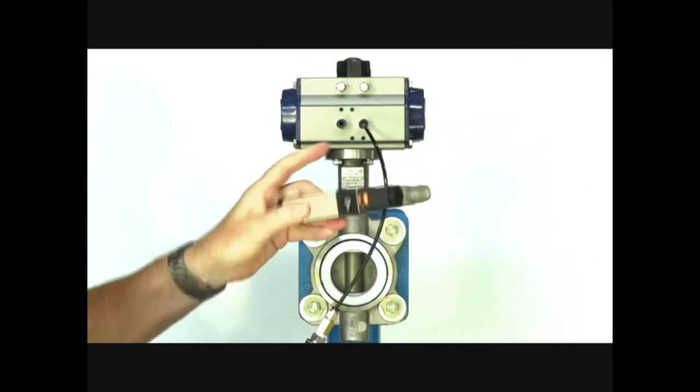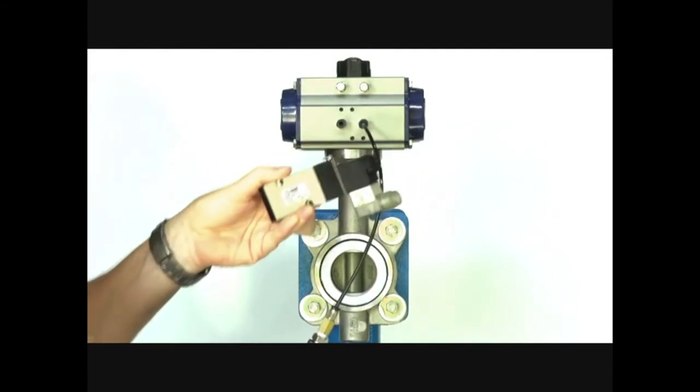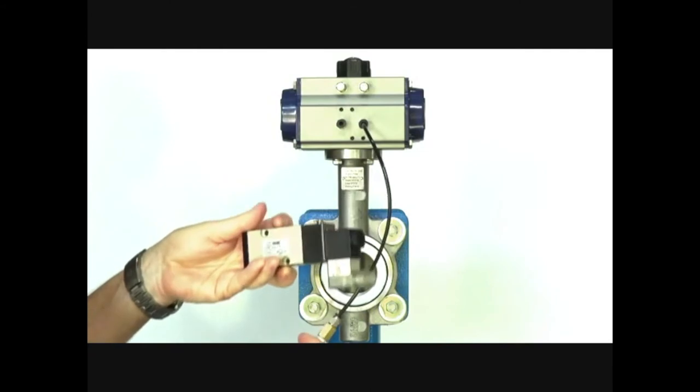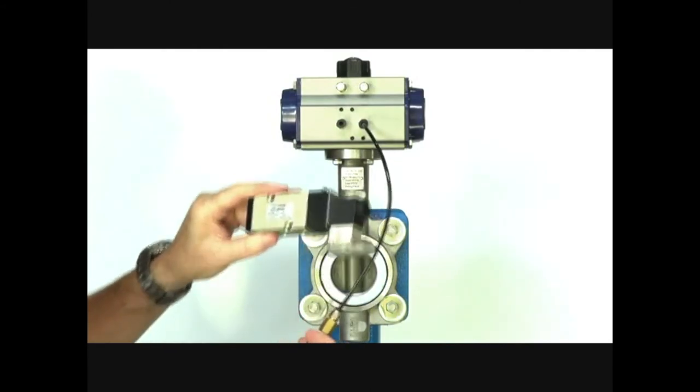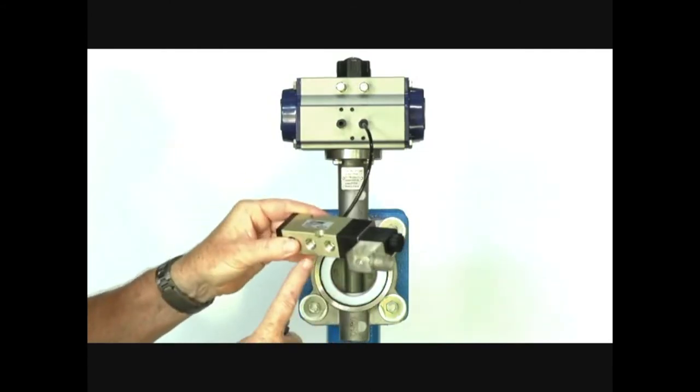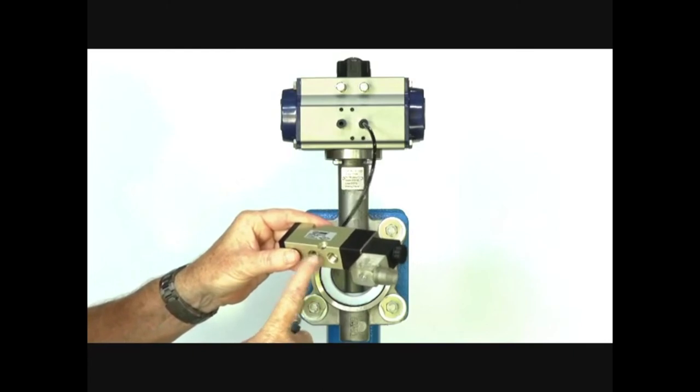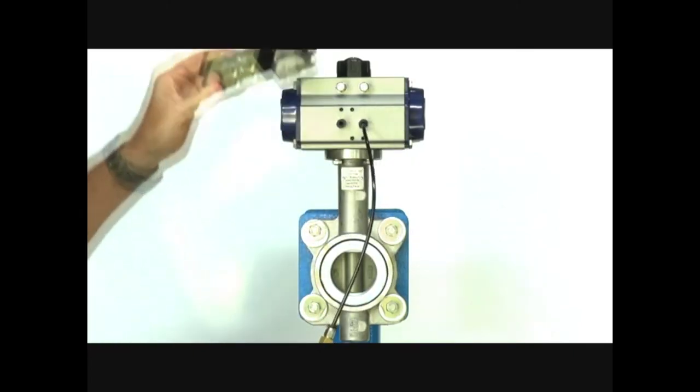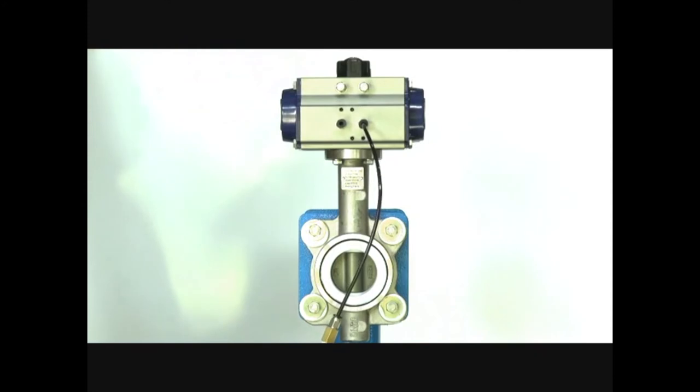This is a Namur interface. The interface is directly onto the actuator. We recommend a 5-2 valve for this application because it takes the air in and gives us filtered air to both sides of the actuator. In this particular case I've kept it simple and will operate the 3-2.